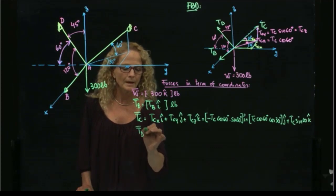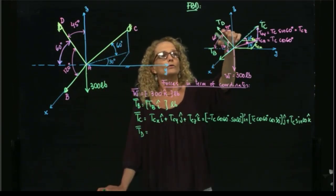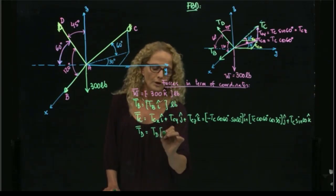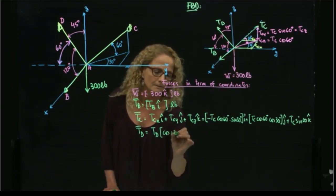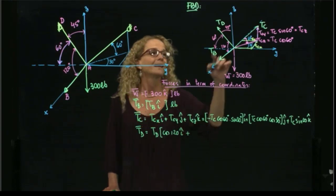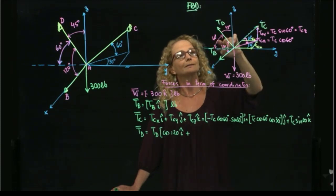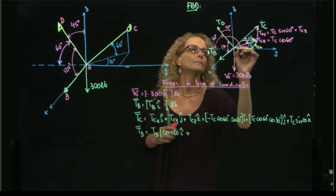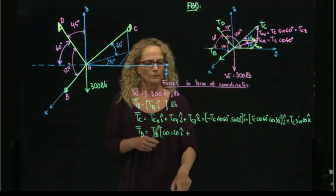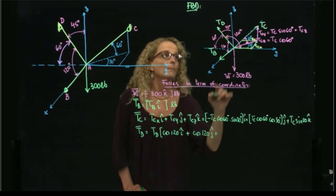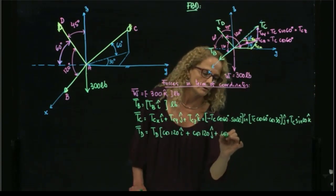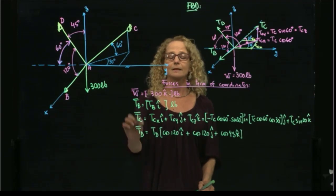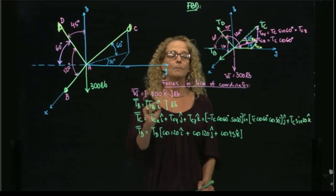Finally, we have TD as a vector and we will use the given angles to find the cosine direction vector. That will be TD times cosine of the angle with the X-axis in I, plus cosine of the angle with the positive Y-axis. Since one side is 60 degrees, the angle with the positive Y-axis is 120 degrees. So that will be cosine of 120 in J, plus cosine of 45 in K.